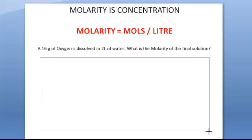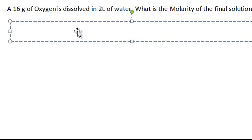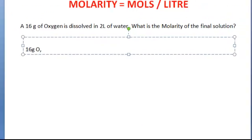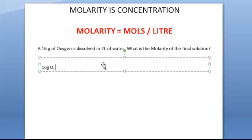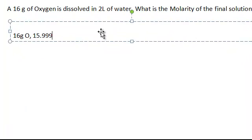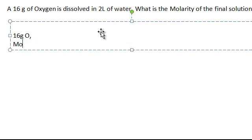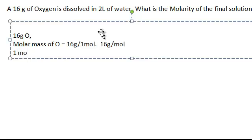Let's see how we tackle a problem like this. First, we're told we have 16 grams of oxygen. If you go to your periodic table, you'll see the molar mass of oxygen is 15.99 — we'll just round it up to 16 grams. So the molar mass of oxygen is 16 grams per mole. If I dissolve 16 grams of oxygen, that means I only have one mole of oxygen.